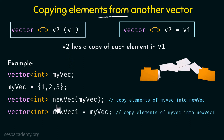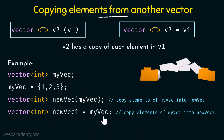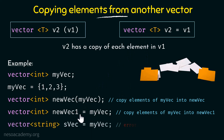Next we define a new vector called newvec1, also of type integer, and say it is equal to myvec. This means the same thing — we are copying all the elements of myvec into newvec1. So this is the assignment copy syntax applied in this example.